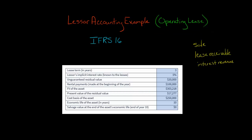Another difference is the lessor is not going to recognize any kind of a sale or cost of goods sold. It doesn't matter — even if they're a manufacturer or dealer, they're not booking a sale. They're also not going to record any lease receivable, and because there's no lease receivable, they're not going to recognize interest revenue. They're just going to record lease revenue every period.